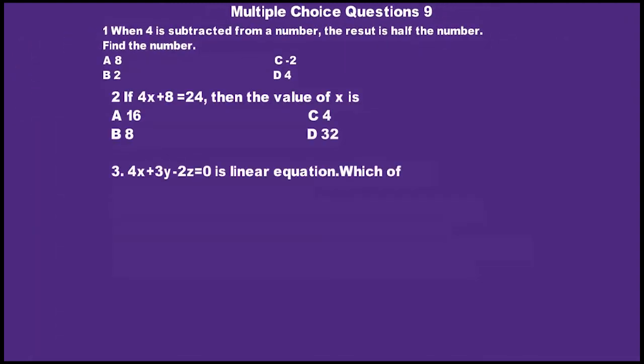Question number 2: If 4x plus 8 equals 24, then the value of x is: A: 16, B: 8, C: 4, D: 32. C is the right option. If you solve this equation, the answer is 4, so C is the right option.